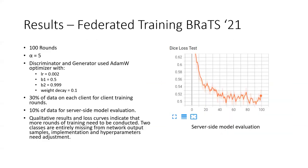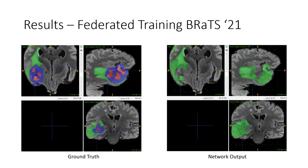Moving on to the second experiment: federated training of this network on the BRATS-21 dataset. Three clients were configured with one server, and 100 total rounds of training were performed using the same hyperparameter values as experiment one. 30% of the data was randomly sampled and distributed to each client, and the remaining 10% was kept server-side for global model evaluation. The results suggest the network could have benefited from additional rounds of training. Looking at the qualitative results, the network was able to somewhat accurately predict one segmentation class but was completely lacking in the other two classes.